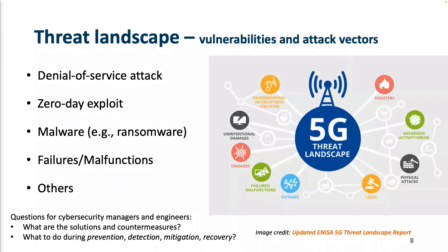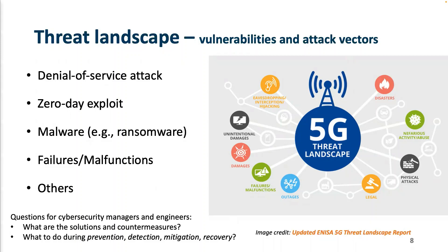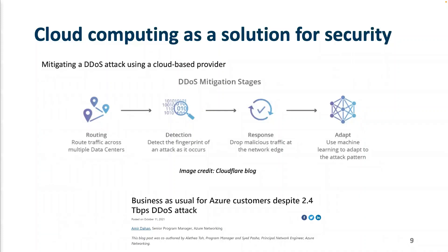A figure from the European Union Agency for Cybersecurity introduces more abnormal behaviors such as physical attacks — meaning attackers can actually tear down a base station tower or bring down a secure lab. Natural disasters can also be categorized as a type of attack. So, with so many threats, what type of security mechanisms can be used to defend against those attacks?